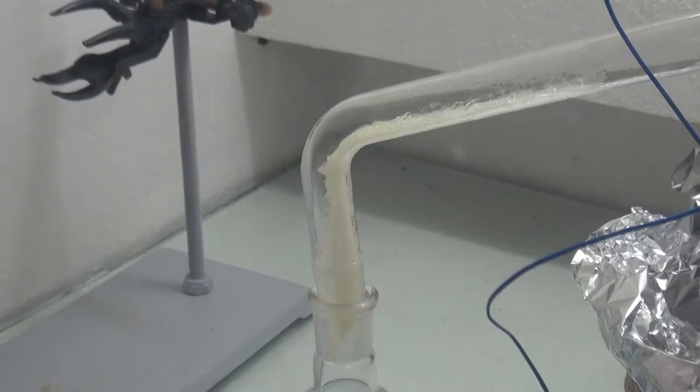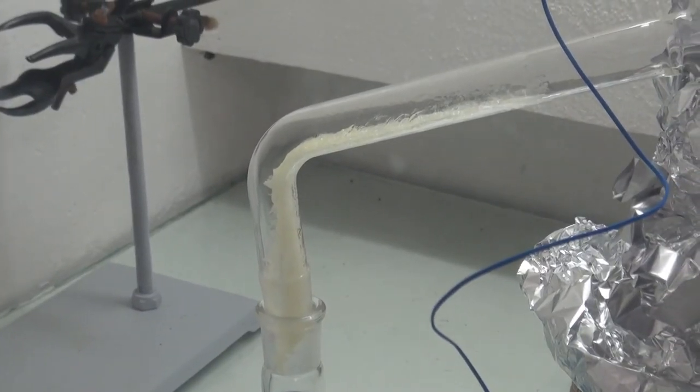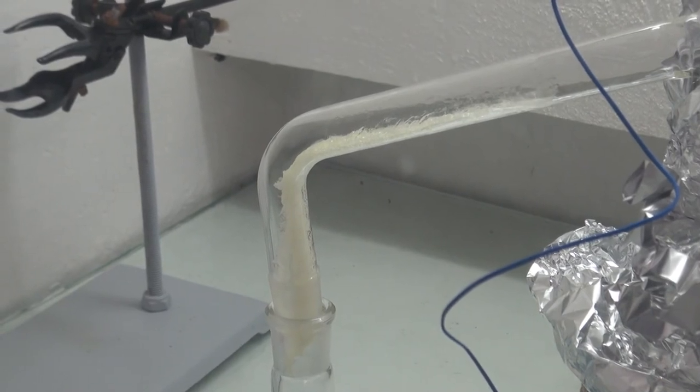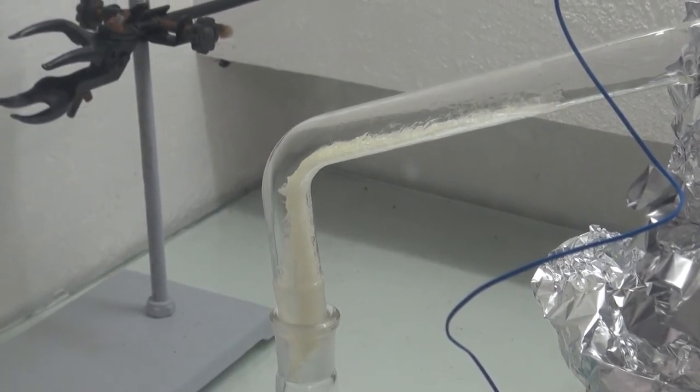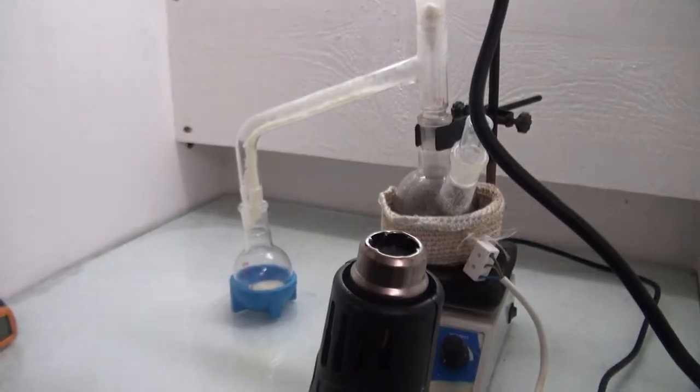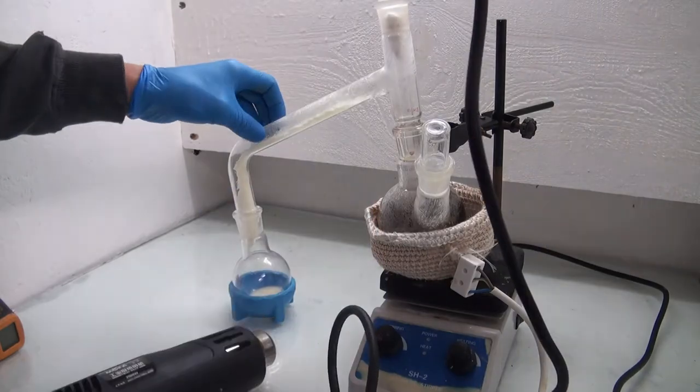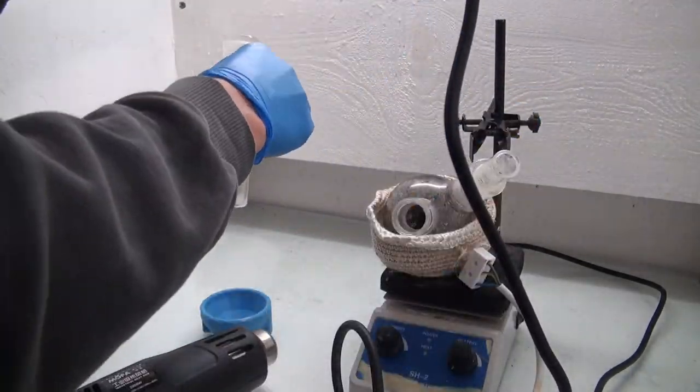It took some time but after a while a white solid started condensing. When everything was collected the apparatus was left to cool down. The leftover chloroacetic acid in the arm was melted into a collecting flask with my hot air gun.